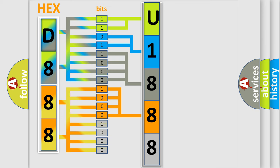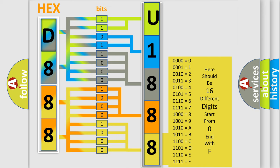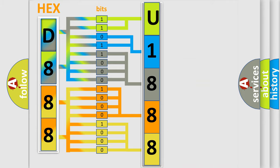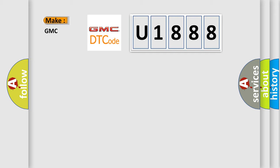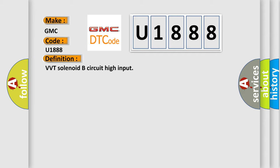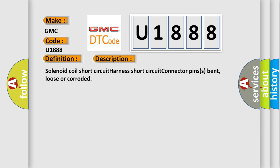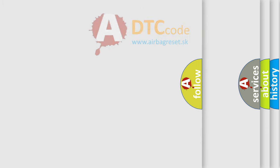A single byte conceals 256 possible combinations. We now know in what way the diagnostic tool translates the received information into a more comprehensible format. The number itself does not make sense if we cannot assign information about what it actually expresses. So, what does the diagnostic trouble code U1888 interpret specifically for GMC car manufacturers? The basic definition is: VVT solenoid B circuit high input. A short description of possible causes includes: solenoid coil short circuit, harness short circuit, and connector pins that are bent, loose, or corroded. The Airbag Reset website aims to provide information in 52 languages.